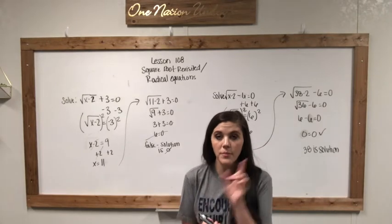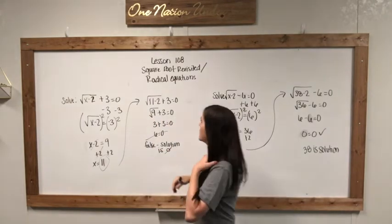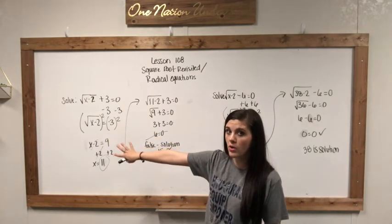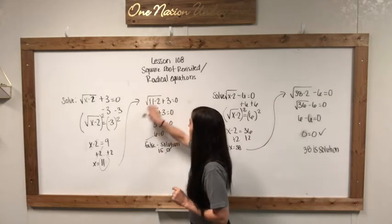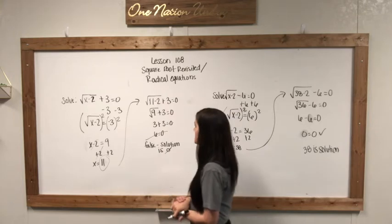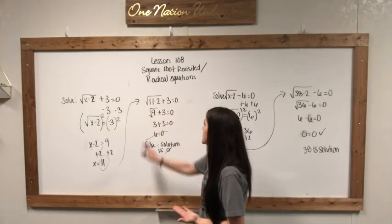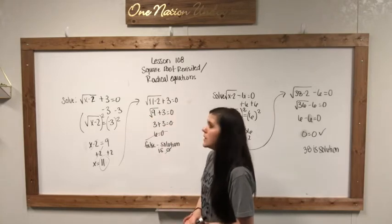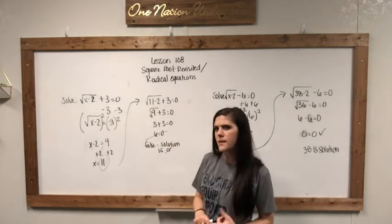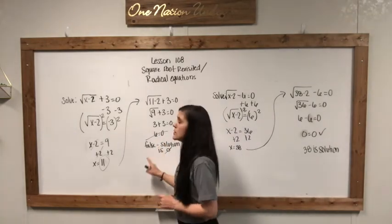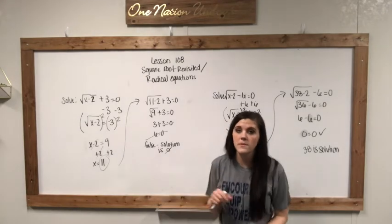This is very important: you have to check yourself, and I'll show you why. We're going to take the solution and plug it into the equation to make sure it's correct. So we plug in 11: the square root of 11 minus two, plus three, equals zero. Eleven minus two gives us nine — the square root of nine is three. So we have three plus three equals zero — but three plus three is six, and six does not equal zero. So this is actually false. The solution to this equation is actually empty set. That is why it's very important for you to check these problems after you have solved.